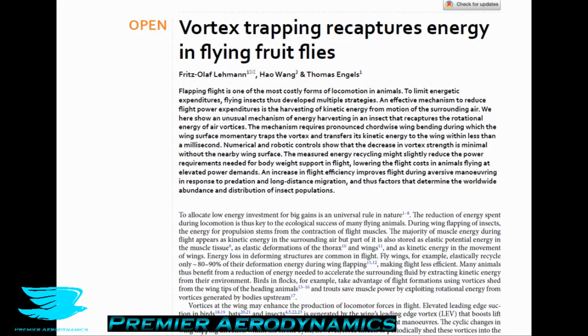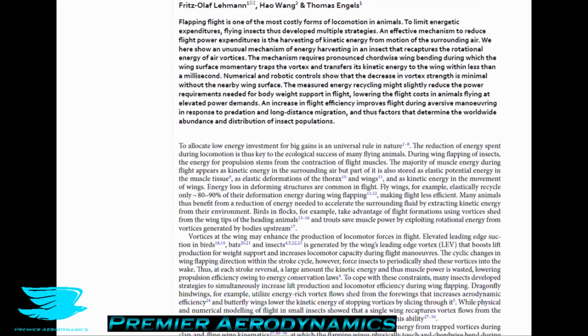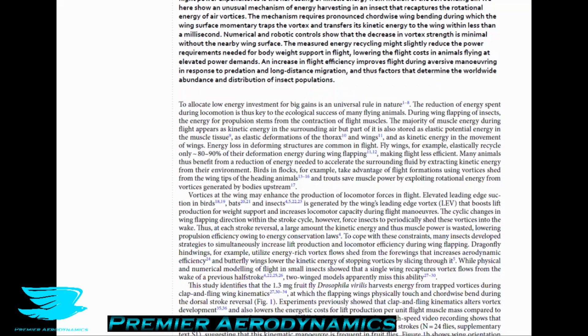During wing flapping, the energy of propulsion stems from the contraction of flight muscles. The majority of muscle energy during flight appears as kinetic energy in the surrounding air, but part of it is also stored as elastic potential energy in the muscle tissue — through elastic deformations of the thorax and wings — and as kinetic energy in the movement of the wings themselves.